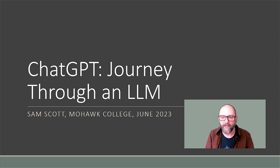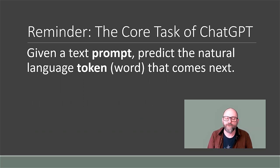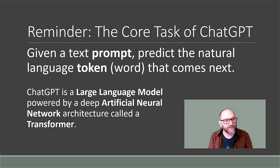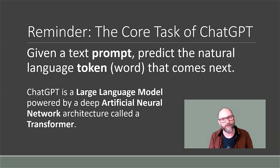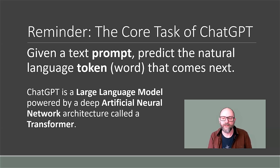This is ChatGPT's journey through an LLM, large language model. If you haven't yet, you should probably take a look at my first video. In that video, I talk about the core task of ChatGPT and models like that — given a text prompt, their main job is to predict the next natural language token, meaning essentially the next word, but it can also mean punctuation, sequences of letters, and parts of words. They're powered by large language models implemented with deep artificial neural networks. The architecture behind those networks is called a transformer architecture, and that's what we're going to look at today. One of the things we're going to highlight is how these networks can generalize, because it's not feasible to just memorize all possible contexts when generating a new word.